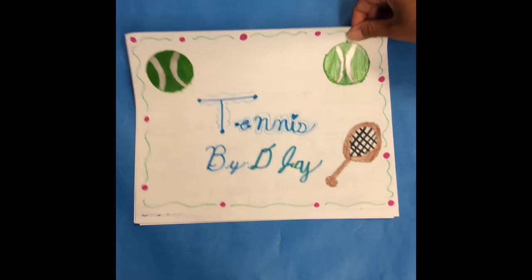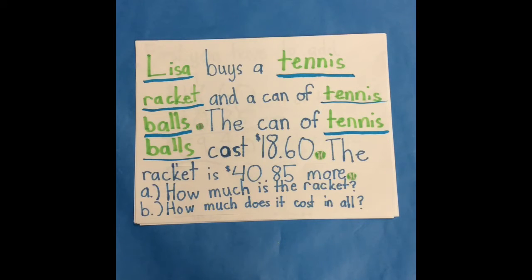Tennis by DJ. Lisa buys a tennis racket and a can of tennis balls. The can of tennis balls cost $18.60. The racket is $40.85 more. How much is the racket? How much does it cost in all?